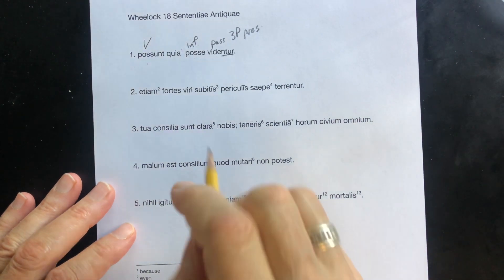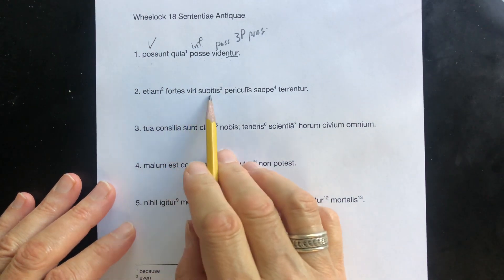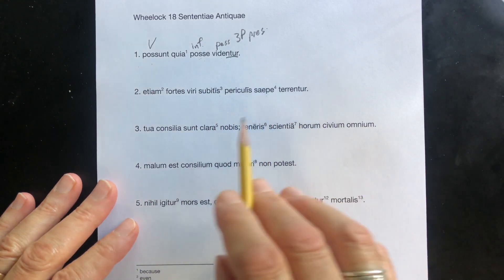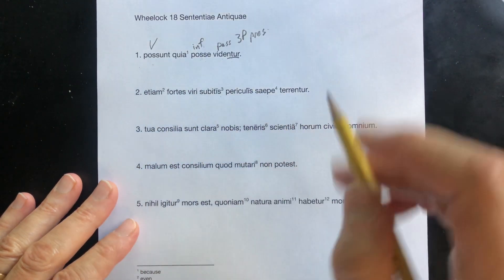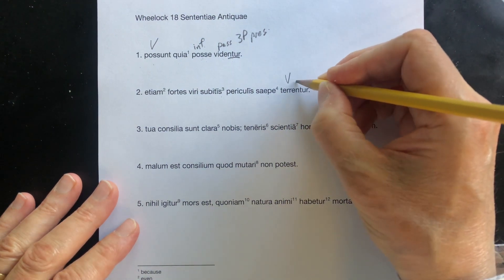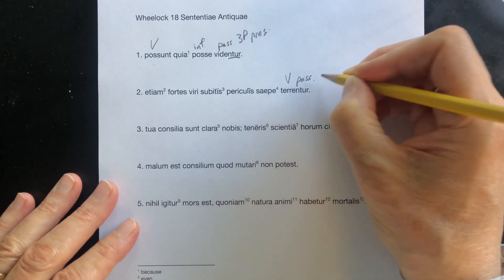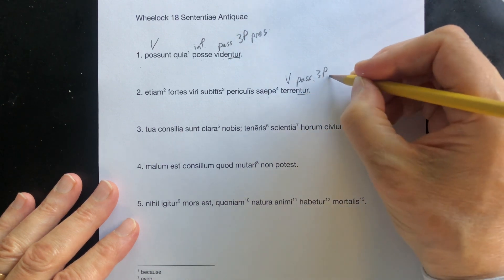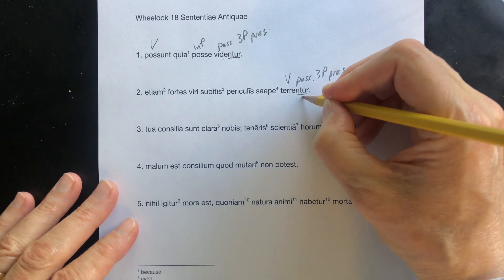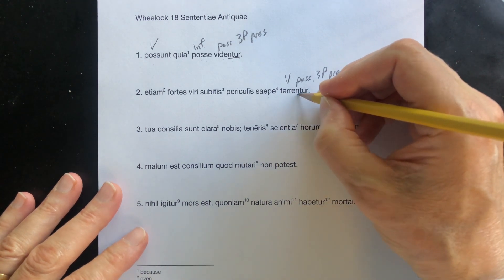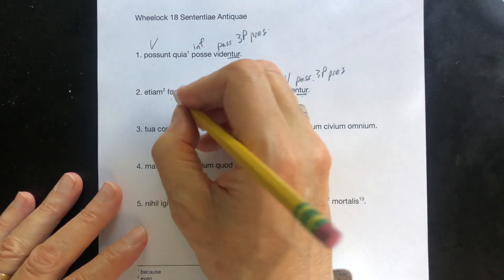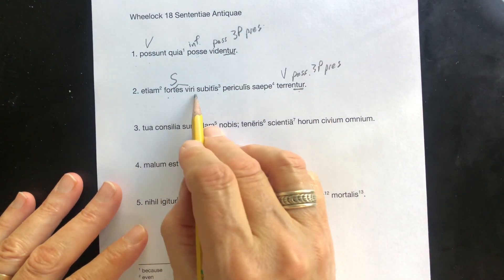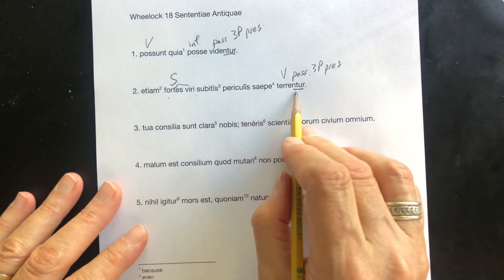Let's take a look at another. Et etiam fortes viri subitis periculis saepe terrentur. All right, verb at the end, there it is. It's going to be passive. 'ntur', that's going to be third person plural, it's going to be present. All right, we're looking for a plural subject because we have a plural verb. Fortes viri. Brave men are terrified.